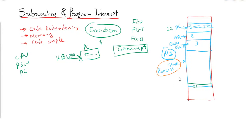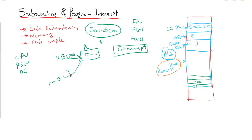So the address 200 will again be stored into the stack. Then, let's say while we are managing the mouse interrupt, we receive an interrupt request from the printer. Whatever the current address in the mouse subroutine is — say location 300 — that 300 will be stored into the process stack, and then the printer interrupt will be managed.